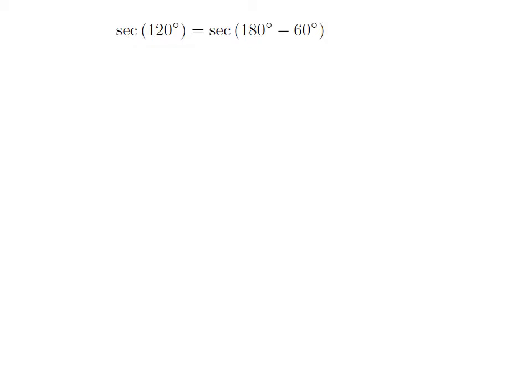As 120 degrees is equal to 180 degrees minus 60 degrees, so secant of 120 degrees is equal to secant of 180 degrees minus 60 degrees.